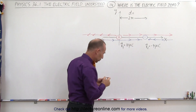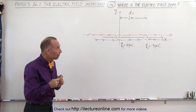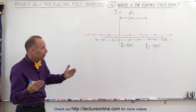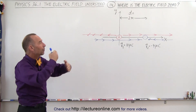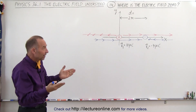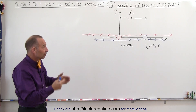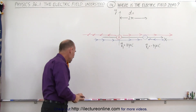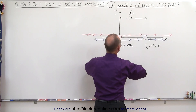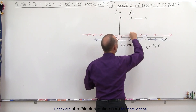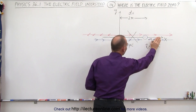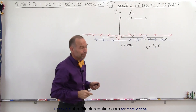The only place where the electric field could potentially be zero is where the two electric fields point in opposite directions. If they point in the same direction, they're additive and the electric field could never be zero. That means in the region between the two charges, you could never have a zero electric field.